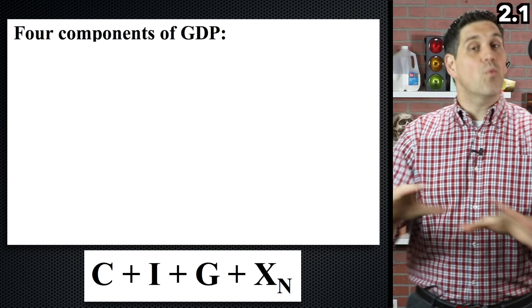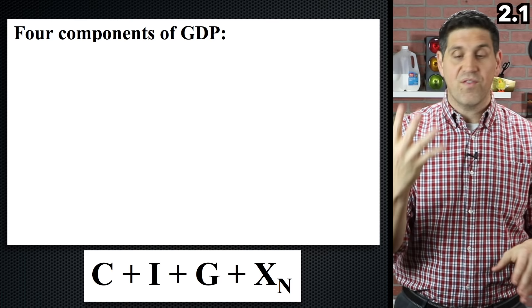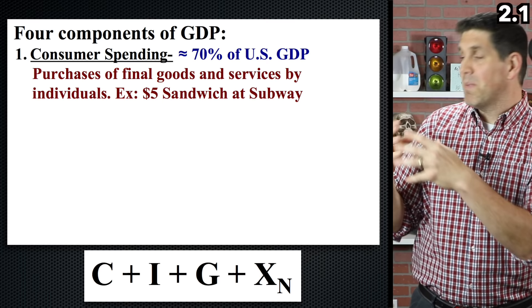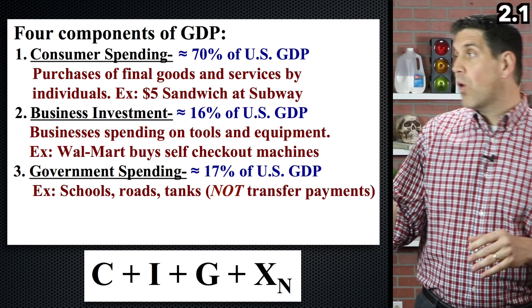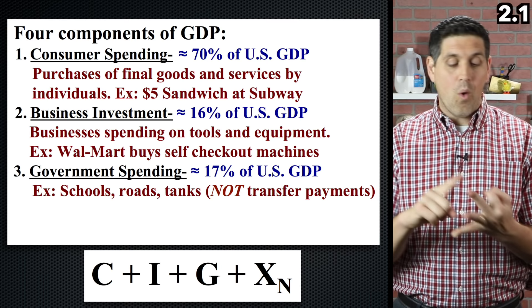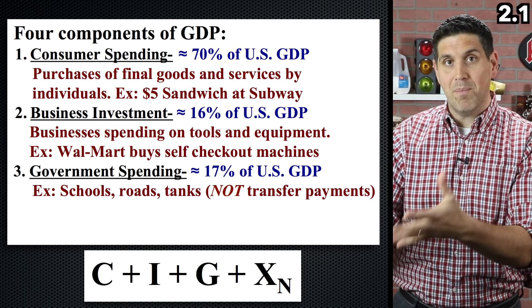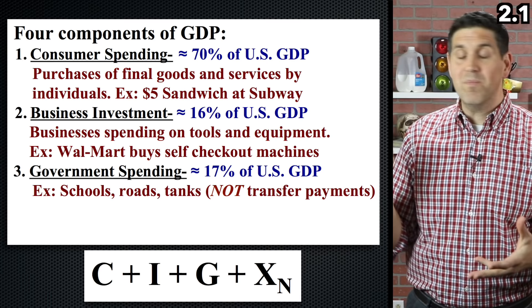All the things around you can be purchased by one of four different entities. The first is consumers — the vast majority of the US economy is consumer spending, people like you and me buying stuff. The second is investment, which is businesses buying stuff, usually capital like machines, tools, and factories. Third is government spending — infrastructure like roads, national defense, or services provided — but not transfer payments. A transfer payment is when the government gives money to people like Social Security or welfare without providing a good or service. So Social Security does not count as part of government spending in GDP.